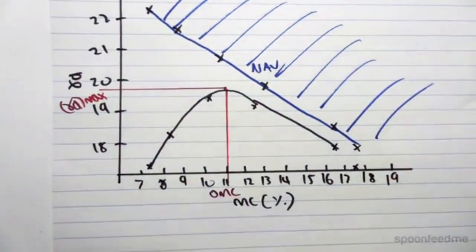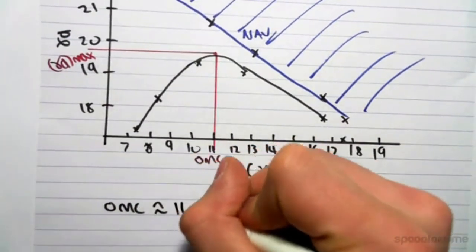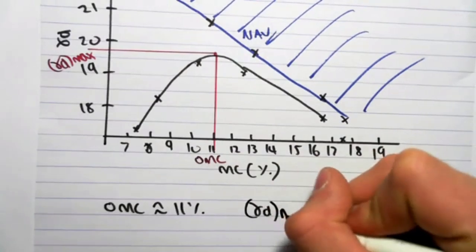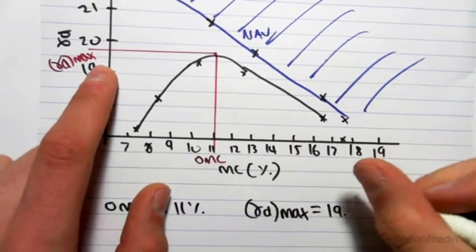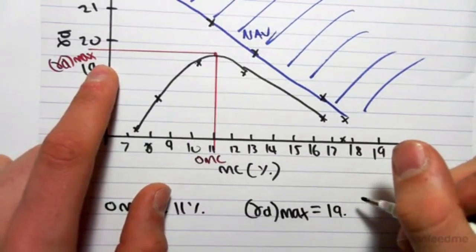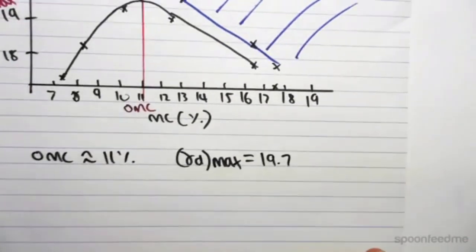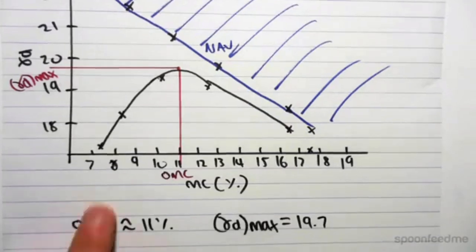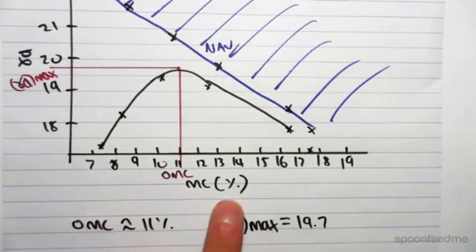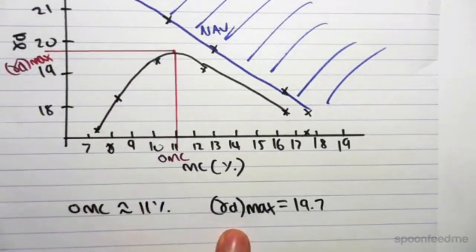We can discover that this is our optimum moisture content and this is our gamma dry max. We find that our optimum moisture content is roughly 11%, and our gamma dry max is roughly 19.7. This is a complete example of plotting the no air voids line, the moisture content against the gamma dry, and we've seen now how to find the optimum moisture content and the maximum dry unit weight. Hope that helps, guys.